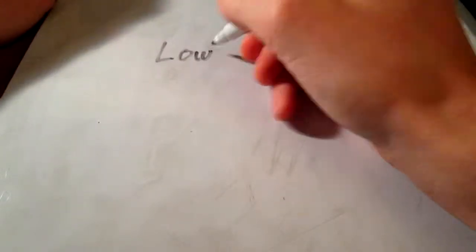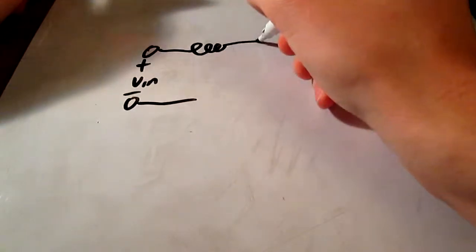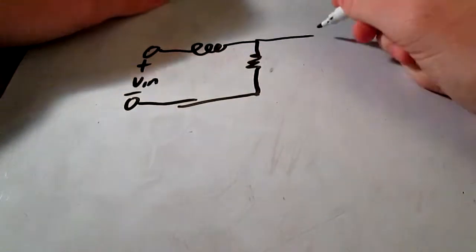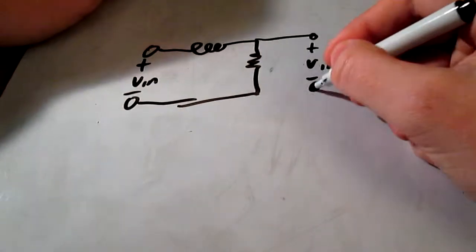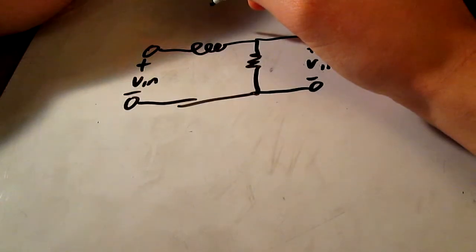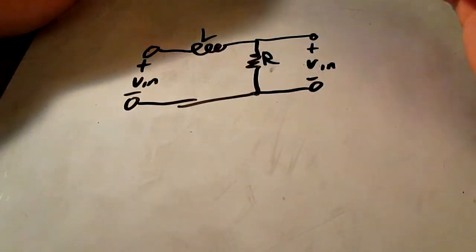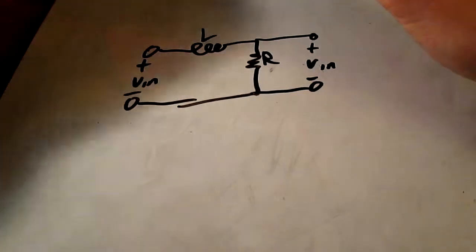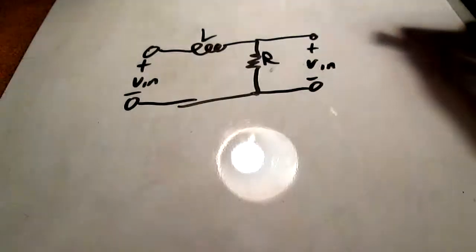A simple lowpass filter. Let me get a better marker for you. A simple lowpass filter looks like this. This is an inductor based lowpass filter. We will primarily be using capacitor based lowpass filters because they are easier to design around.